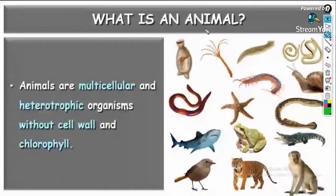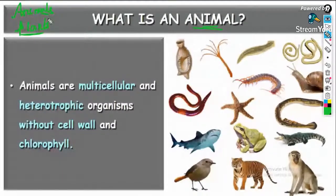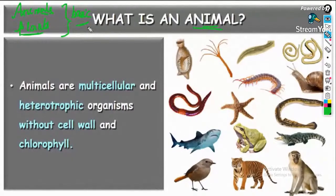At the very first, we have to study what is meant by an animal. Aristotle classified organisms into two groups: animals and plants. Animals can move from one place to another; plants cannot. Plants can prepare their own food; animals cannot. These are basic concepts a student from class 3 or 4 would say about animals.